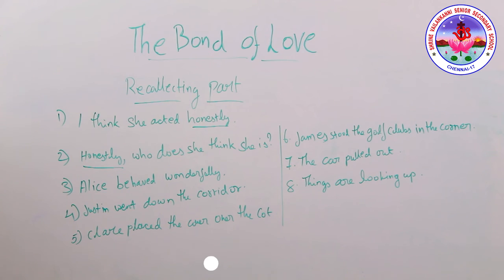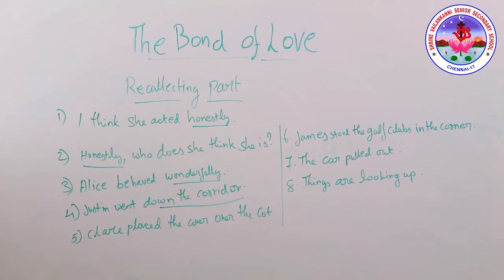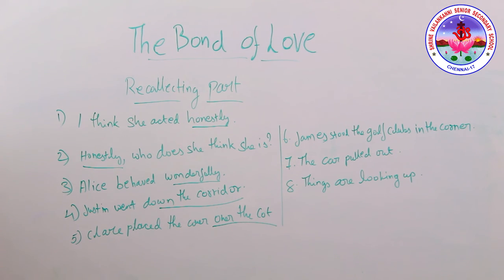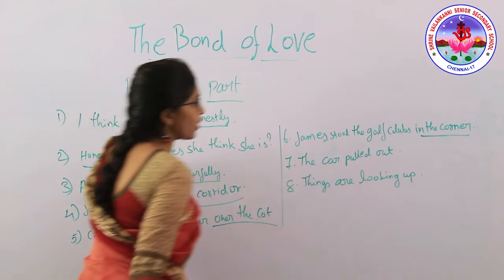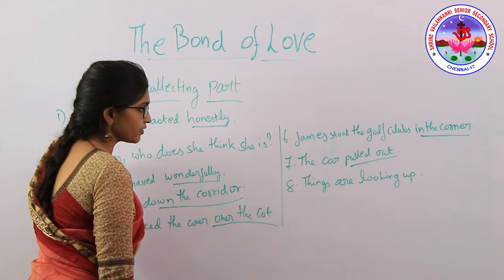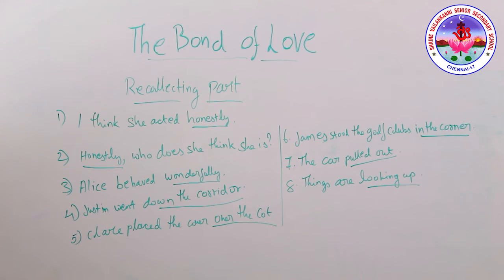'Allah behaved wonderfully' — 'wonderfully' is adverb of manner. 'Justin went down the corridor' — 'down the corridor' is adverb of place. 'Claire placed the cover over the coat' — 'over the coat' is adverb of place. 'James stood the golf clubs in the corner' — 'in the corner' is adverb of place. 'The car pulled out' — adverb of place. 'Things are looking up' — also adverb of place. Note the two phrasal verbs here: 'pulled out' and 'looking up.'